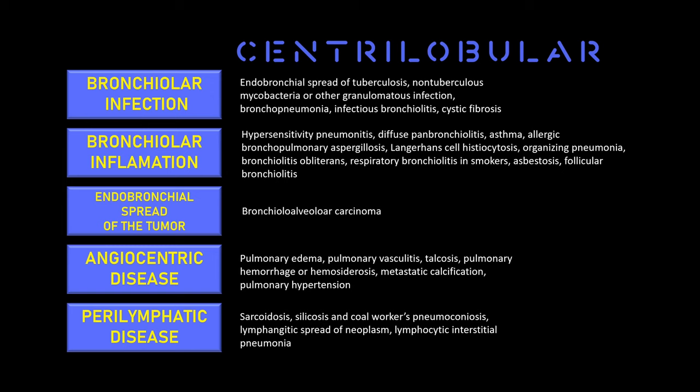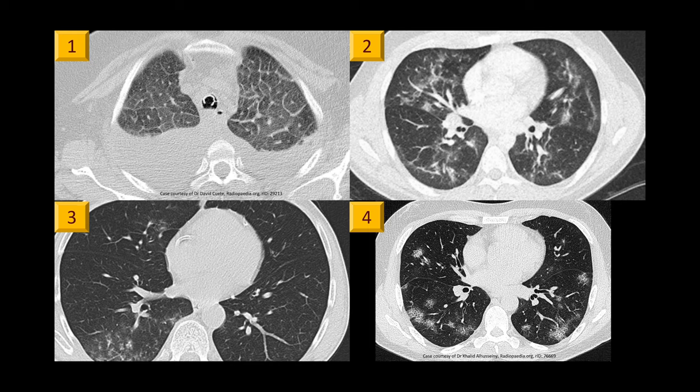Remember that the lymphatics go in the perilobular septa, but they stand in the centrilobular space as well. And now, I'm sure you're confident to say which one of these patients has atypical findings for COVID-19. I'll give you some seconds to think about the answer and how to describe the findings.